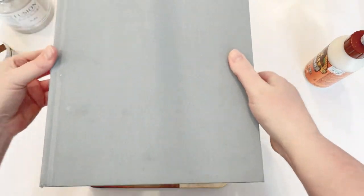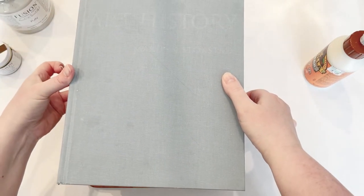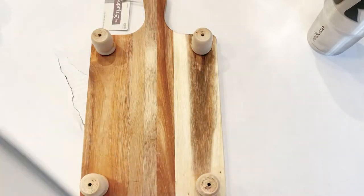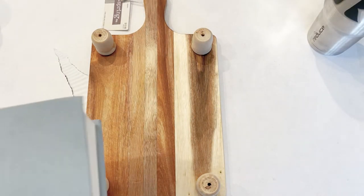So once I have those really smoothed out, I'm going to take something really heavy. I have this really big book and I'm going to place it on top of the candle holders and let it sit for at least 30 minutes to an hour to help the wood glue dry really well.